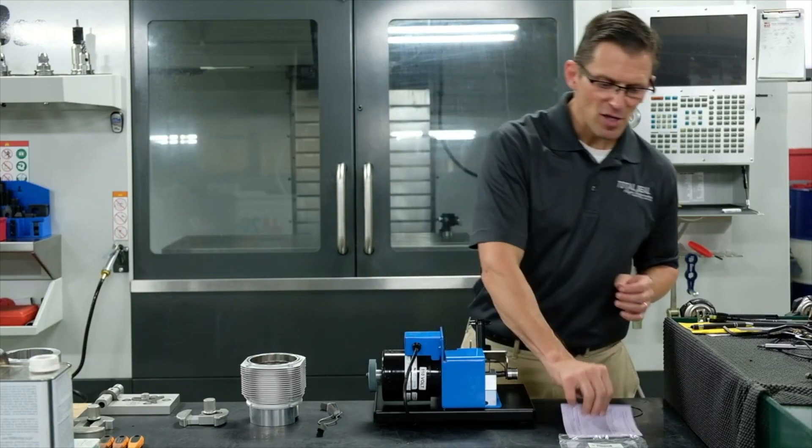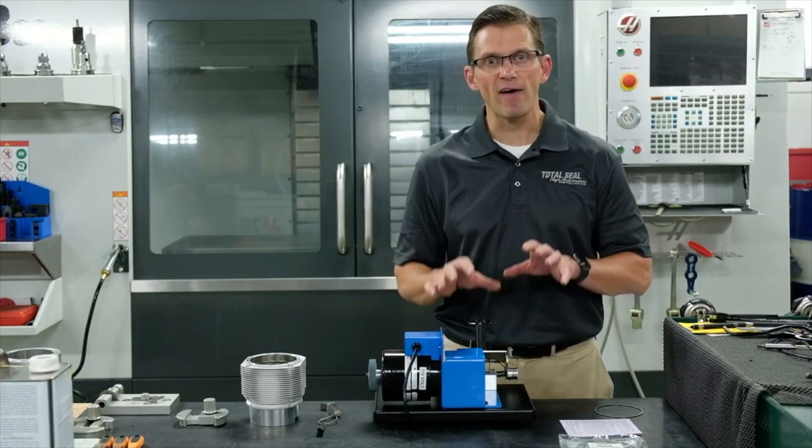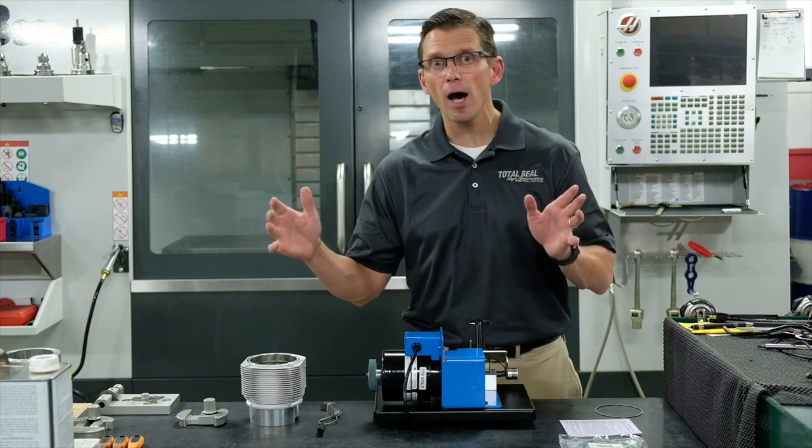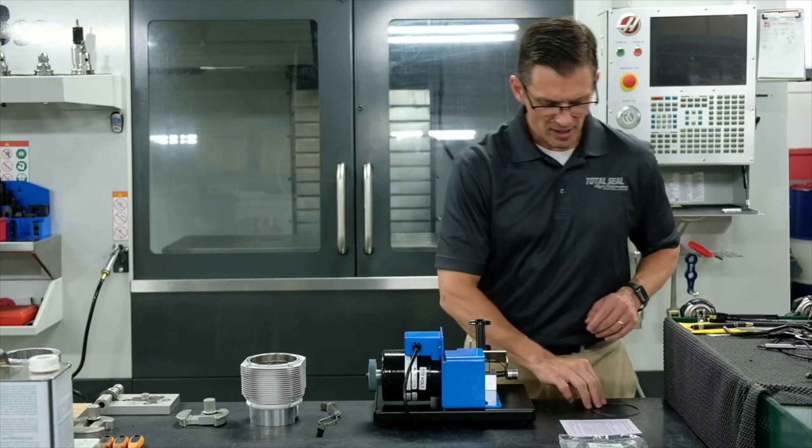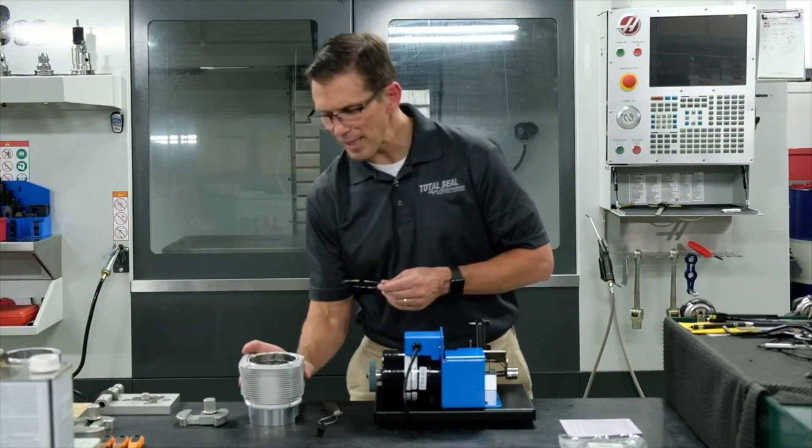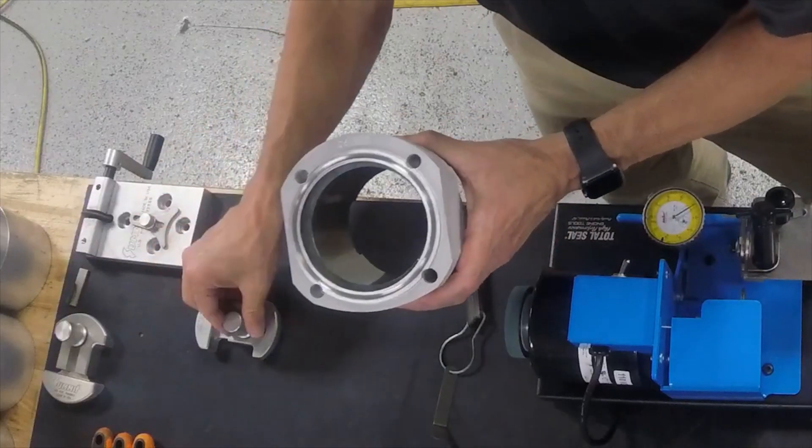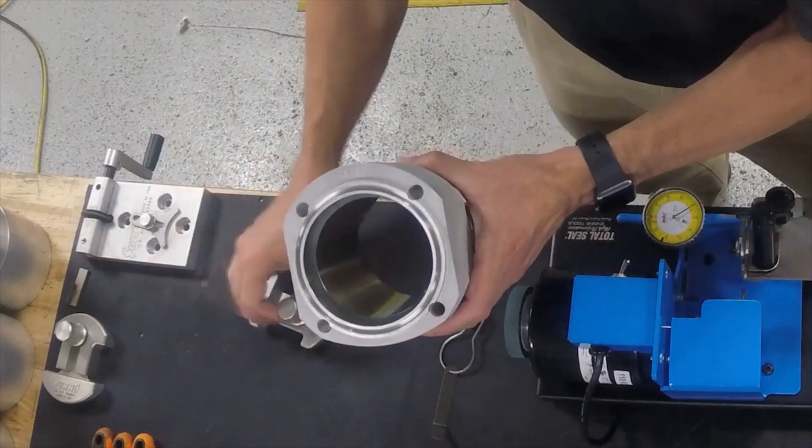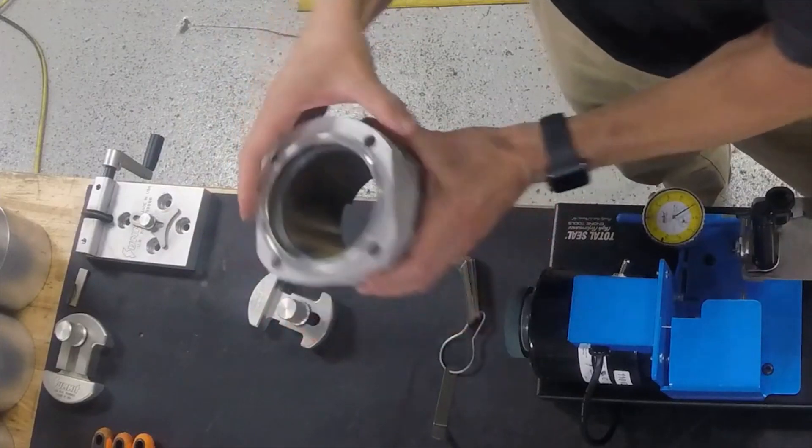Once you've done that, you need to check your rings to see if they need to be filed to fit. Some sets will need to be opened up, some sets are drop-in. So the first thing you want to do is take your new ring and place it in the bore. We've already put one in here and we use this handy-dandy ring squaring tool to place the ring at the correct depth and make sure that it's square in the bore.